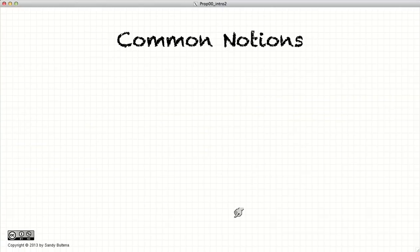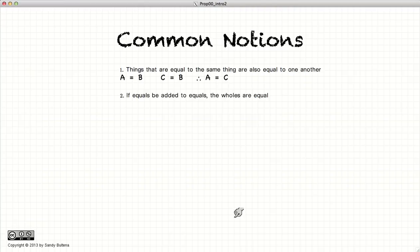So, what are the common notions? Well, common notions are not the same thing as postulates, in that they are what was then accepted mathematical truths independent of geometry. They are: things that are equal to the same thing are also equal to one another. If equals be added to equals, the wholes are equal. So, if A equals B, then A plus C equals B plus C.